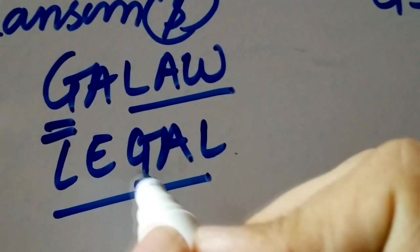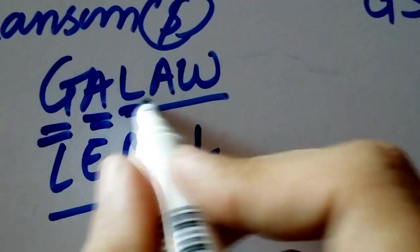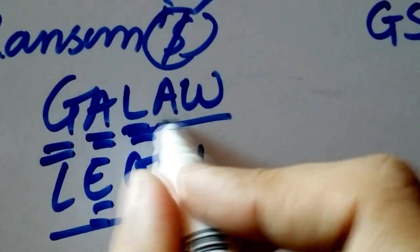G stands for glucose, A stands for age, L stands for LDH, E stands for enzyme or AST.